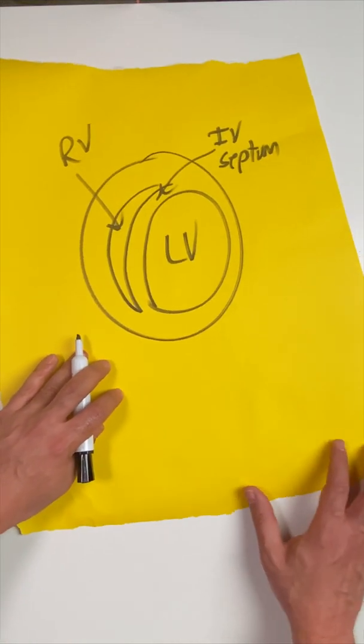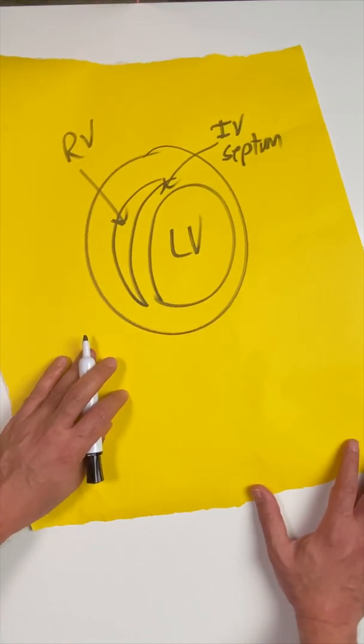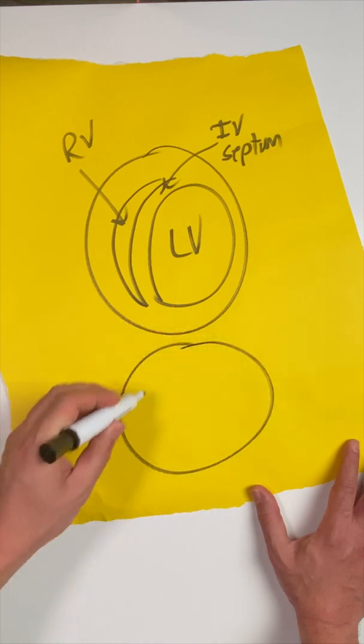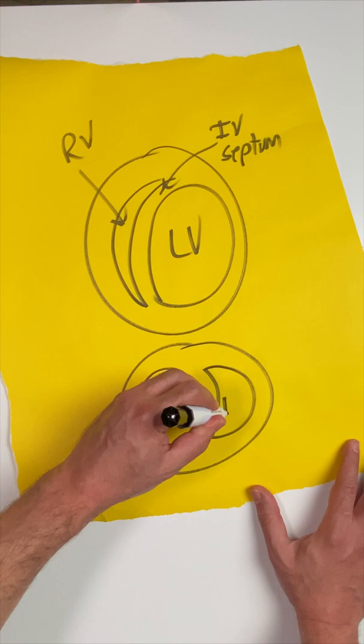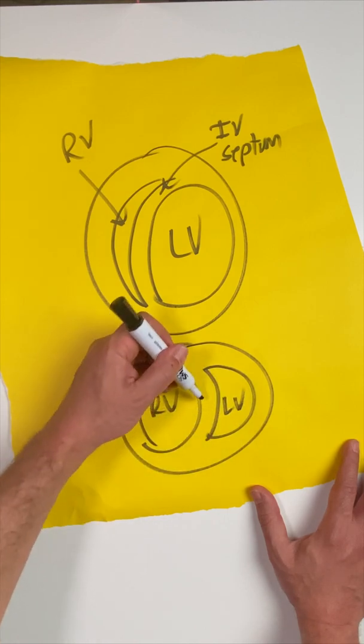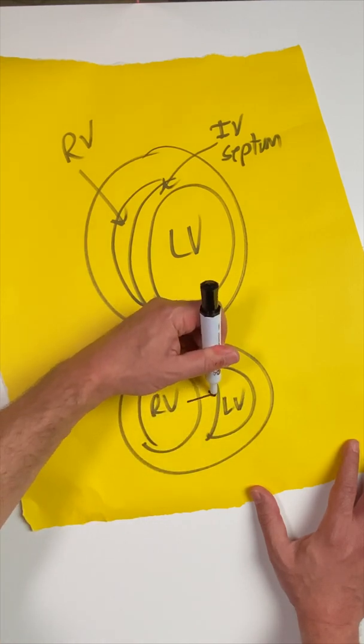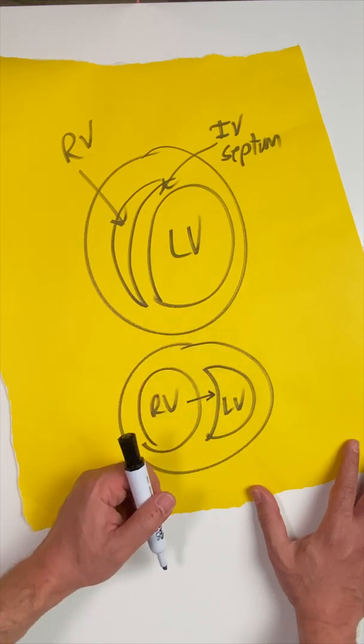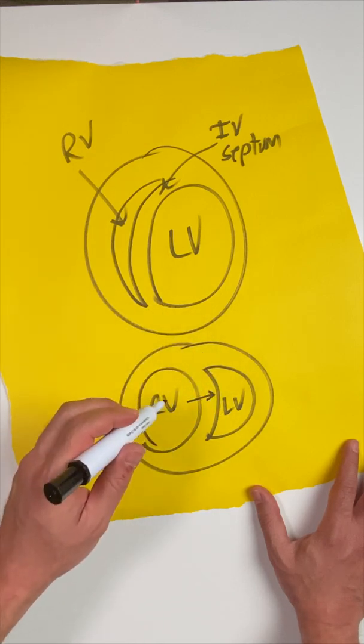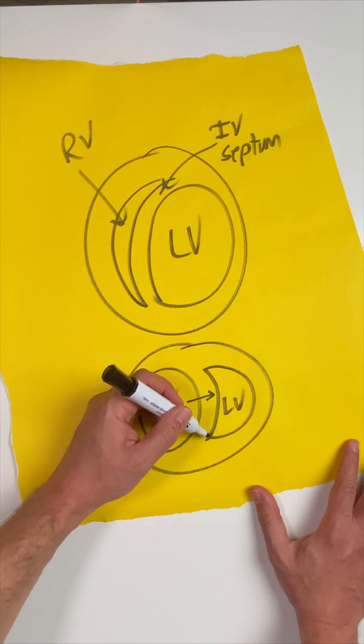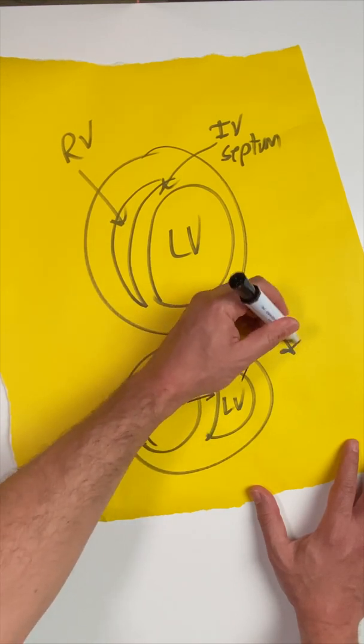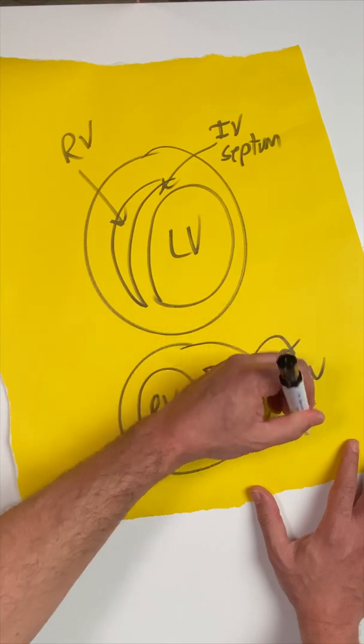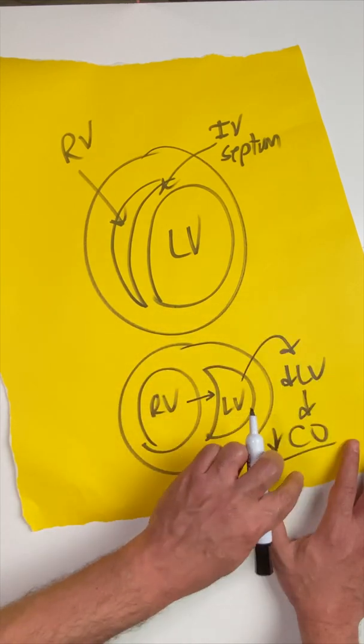However, when you have someone who's going into RV failure, let's say from a massive PE, what winds up happening is that your RV now starts to become circular and you start to get the LV like this. Notice what's happening here, that interventricular septum is now shifting over and bowing into that LV. This not only hurts the performance of the RV during systole, but it also encroaches on the amount of filling that can happen in the LV. And if you decrease the filling of the LV, then you decrease cardiac output. This leads to shock and all sorts of badness.